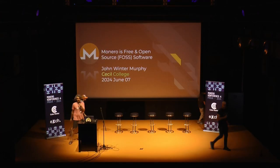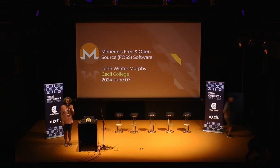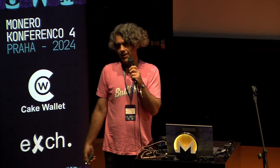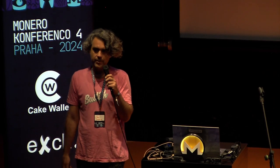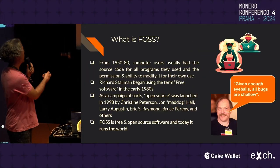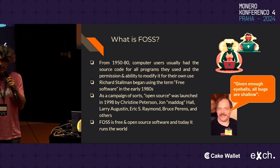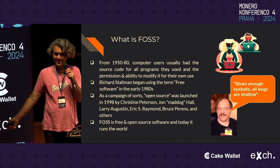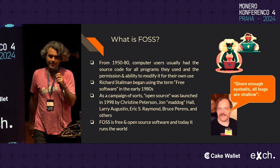I'll be as quick as I can. Thank you everyone for sticking around. I am John Murphy. I've been involved in Monero for about ten years, a little over ten years now, so basically since the beginning. I've been involved in the open-source movement slightly longer than that. I started to get interested in Python, Octave — which is like a MATLAB alternative — and Linux when I was in grad school in about 2011-2012. I'm now a professor at Cecil College where I teach engineering.